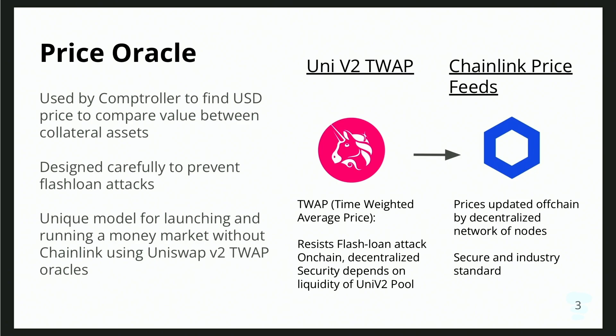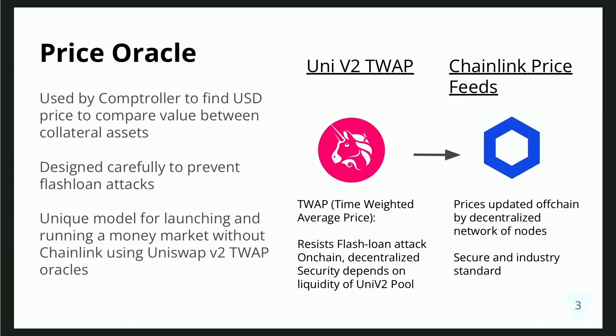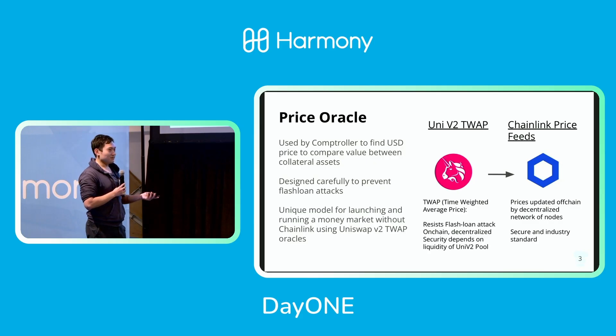The drawback of TWAP is that it uses time-weighted average price instead of volume-weighted average price, so there is a delay in price freshness. Also, you're reliant on the liquidity of the DEX — if the DEX has low liquidity, prices can be very volatile. For these reasons, we want to eventually move to Chainlink oracles, which may be available next week. However, our current TWAP oracle is also designed to prevent flash loan attacks, since we use the time-weighted average price — a flash loan attack would only affect one block and not the actual TWAP price. This is a novel approach, and we can potentially reuse it for other blockchains without Chainlink.